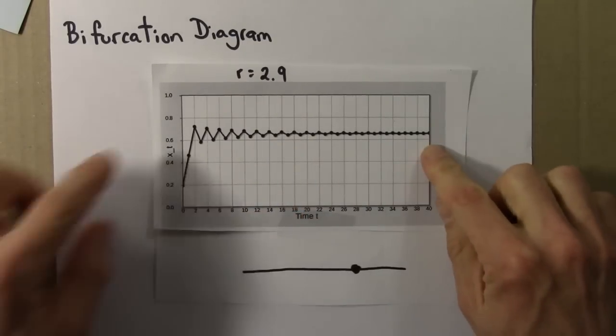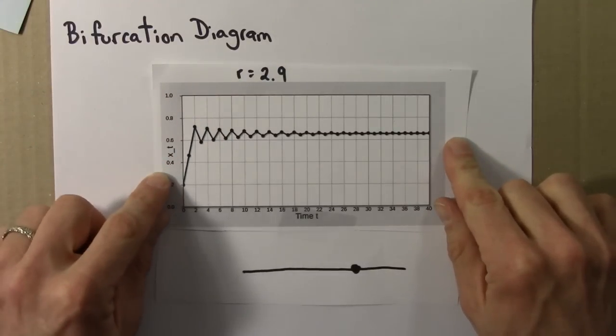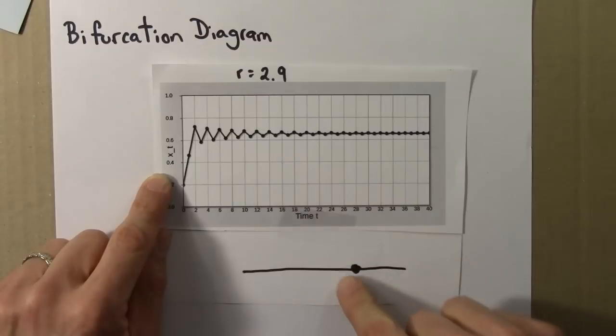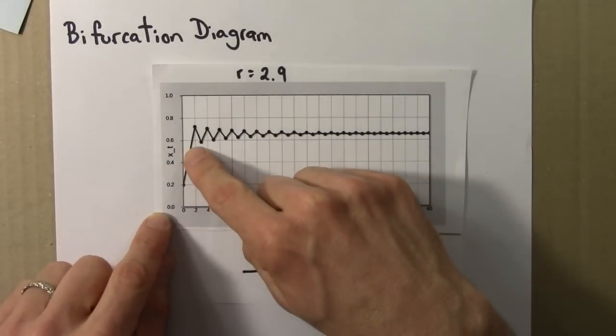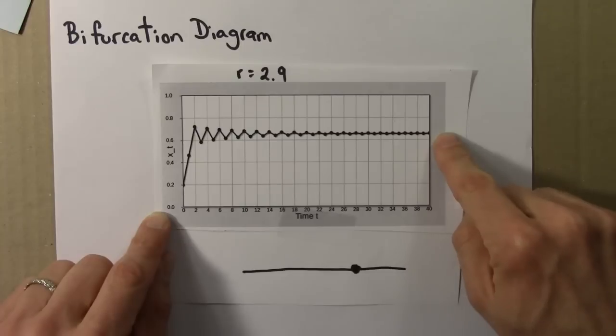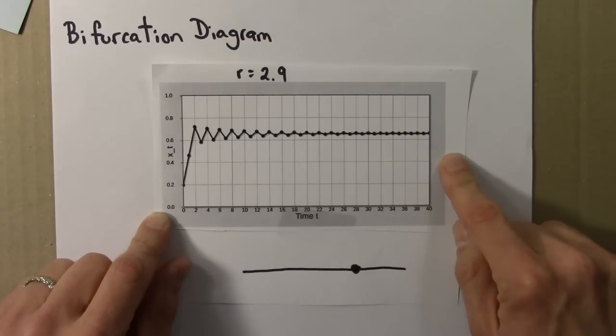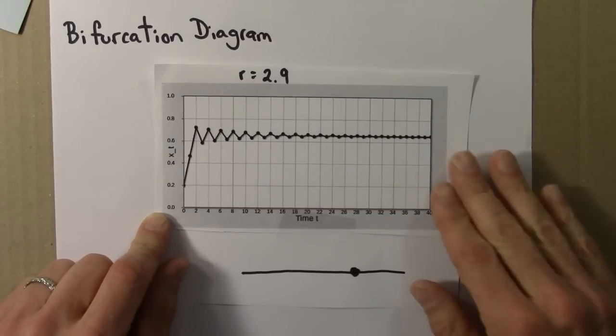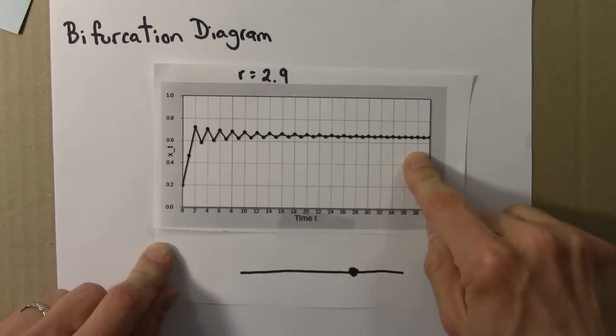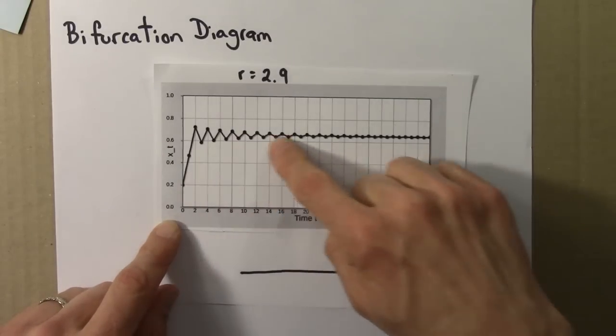As a practical matter, we need to tell the computer two things. We're interested in the final state, so we want it to not plot the first 20 or 40 or even 100 or 200 values in the orbit. Since we're interested in the long term behavior, we don't care about the short run. So we need to tell it how many iterates to ignore.